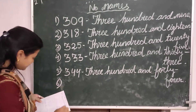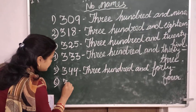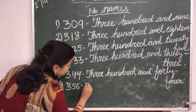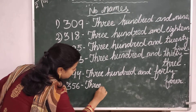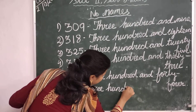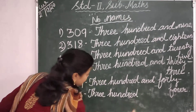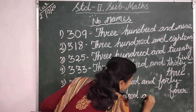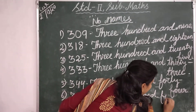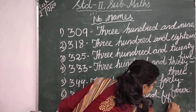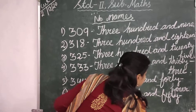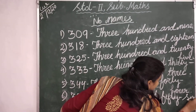Then the next number is 356. Three hundred and fifty-six. T-H-R-E-E H-U-N-D-R-E-D and fifty-six. F-I-F-T-Y S-I-X.